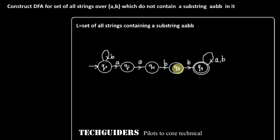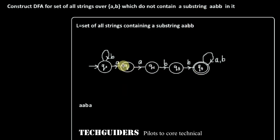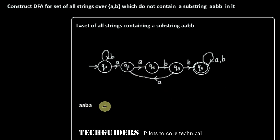What happens if we see an A from state Q3? We reached Q3 after seeing the substring AAB, but instead of B, it is followed by an A. Then we need another ABB to reach the final state. So we move back to state Q1, which remembers that A of the substring AABB is seen and is now expecting ABB. So from Q3 we have both transitions covered.